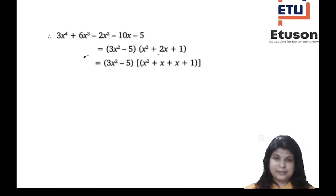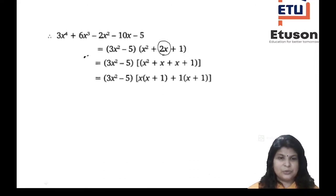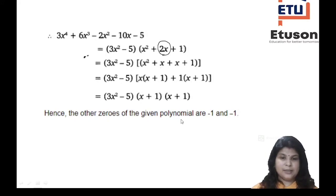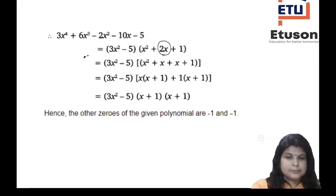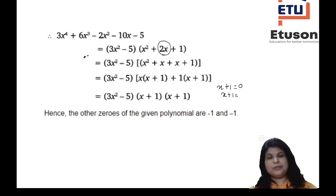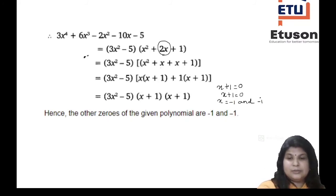Now we split the middle term of x² + 2x + 1. We need two numbers whose product is 1 and sum is 2: that is 1 and 1. So factorizing gives (x + 1)(x + 1). Therefore the full factorization is (3x² - 5)(x + 1)(x + 1). Setting x + 1 = 0 gives x = -1 (repeated). So the other two zeros are -1 and -1.